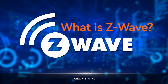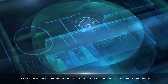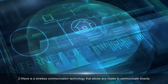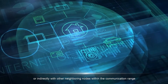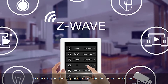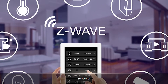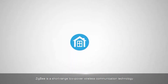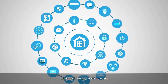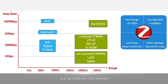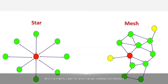Z-Wave is a wireless communication technology that allows any nodes to communicate directly or indirectly with other neighboring nodes within the communication range. ZigBee is a short-range, low-power wireless communication technology. ZigBee's data transmission module is similar to a mobile network base station, and it is mainly used for short-range wireless connections.